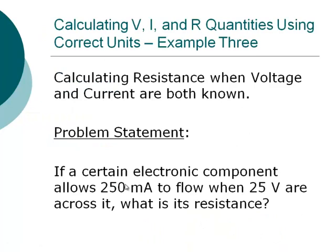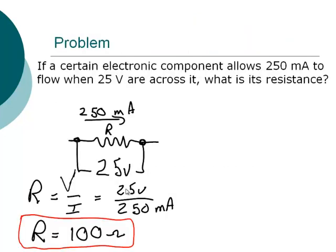The third example: calculate resistance when voltage and current are both known. Draw the picture with the resistor, current direction, and voltage across it. Using R = V/I: 25 volts divided by 250 milliamps gives 100 ohms. One thing to make sure you know is how to do the math correctly in these calculations.